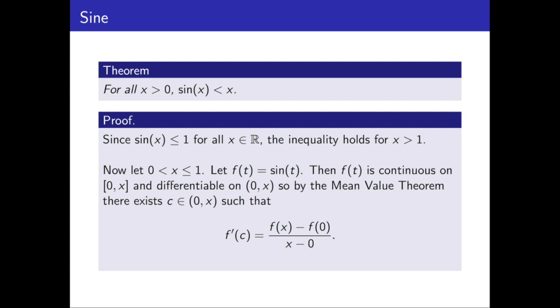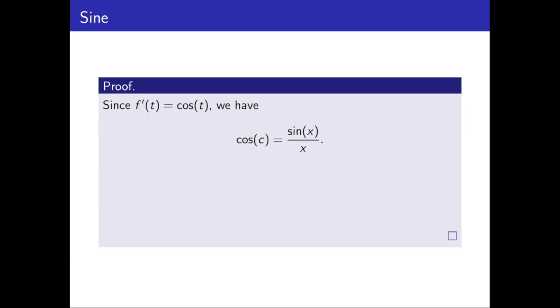Now we know what the derivative of sine is. It's cosine. So we can fill in the function and its derivative into this equation. And we get cosine of c is equal to sine of x over x.